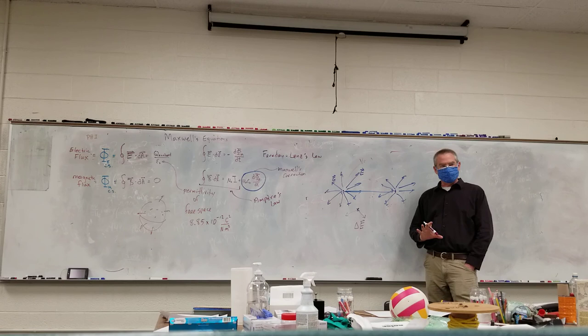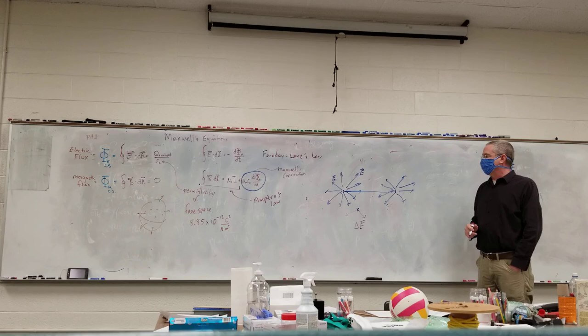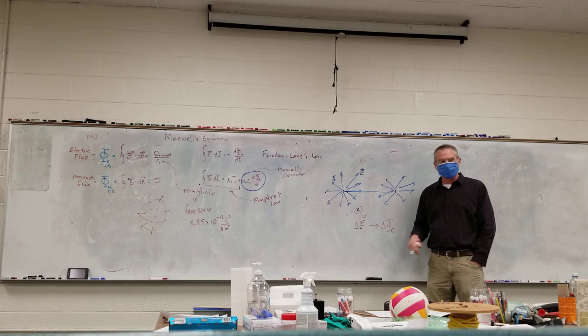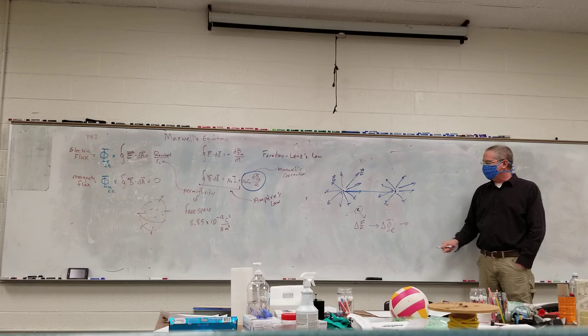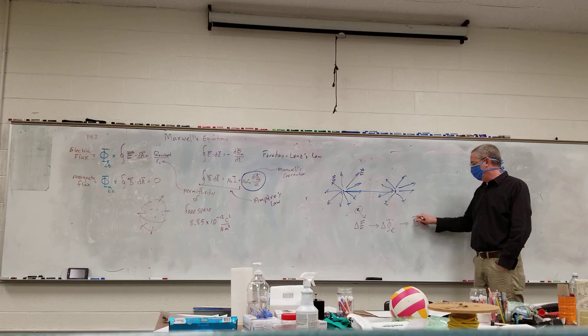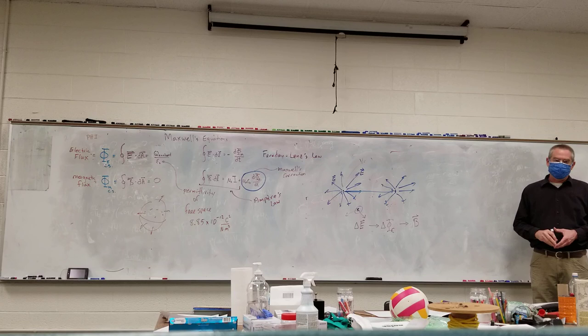If I have a change in the electric field, that means I have a change in my electric flux. If I have a change in my electric flux, that means I've created a magnetic field. That's basically how you create a magnetic field — you just have a charge that moves. If you have a neutral atom moving all together, all the magnetic fields created tend to cancel each other out because it's neutral.